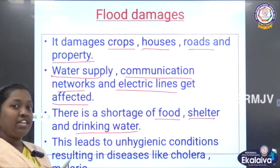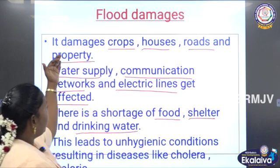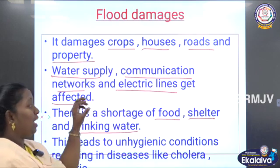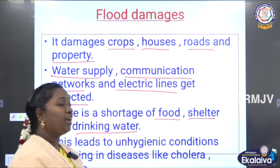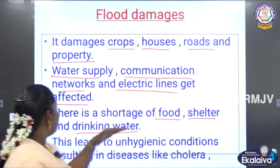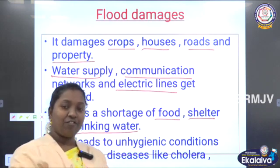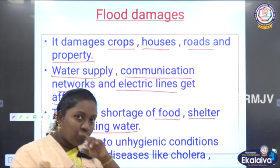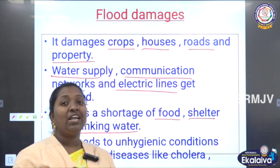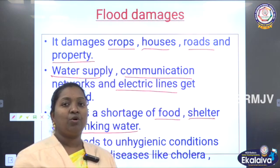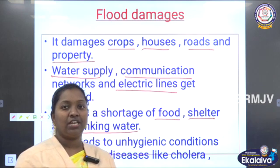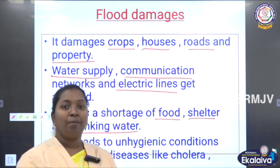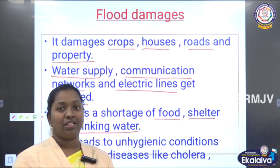Floods collapse houses, roads and properties. Water supply, communication network and electric lines get affected. Most important for us to live is water and food, and that also cannot be obtained during floods. Until the water gets dry or moves away from the place, unhygienic conditions will be present. Due to that unhygienic condition there is a possibility of getting waterborne diseases like cholera and malaria. These are the changes caused by floods.